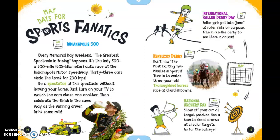May Days for Sports Fanatics. The last Sunday in May is the Indianapolis 500. Every Memorial Day weekend, the greatest spectacle in racing happens — it's the Indy 500, a 500-mile (or 805-kilometer) auto race at the Indianapolis Motor Speedway. 33 cars circle the track for 200 laps. Be a spectator without leaving your home — just turn on your TV to watch the cars chase one another, then celebrate the finish in the same way as the winning driver: drink some milk.